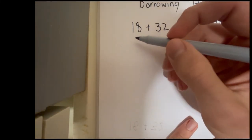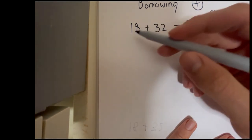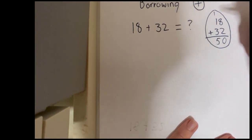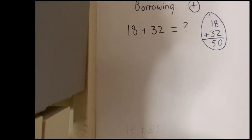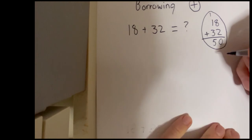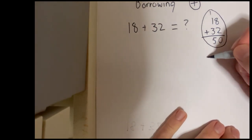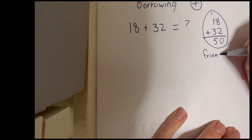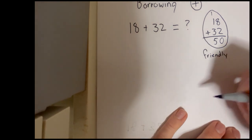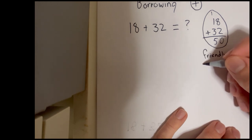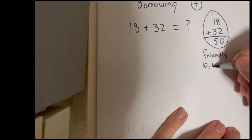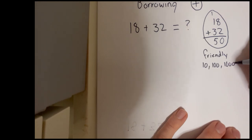If we look here, 18 plus 32, well, they're a bit unfriendly. We're looking at a couple of unfriendly numbers. How can we make this into a friendlier number? Well, friendly numbers usually end in a 0. So our friendly numbers, let me just write this here, they usually end in a 0. So we're looking at 10, 100, 1,000. These are our friendly numbers.